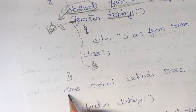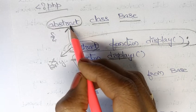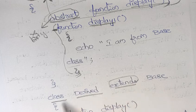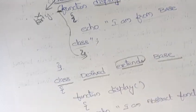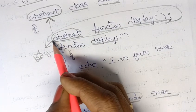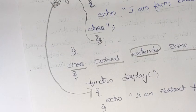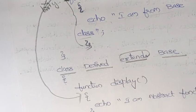Now I want to use another class. The class name is 'Derived'. To use the abstract class, you need to use the extends keyword — so: class Derived extends Base. Next, open the brace. Whatever abstract methods exist in the abstract class must be implemented in the derived class — this is mandatory. In all child classes, the abstract method must be implemented. So here I implement the 'display' function.